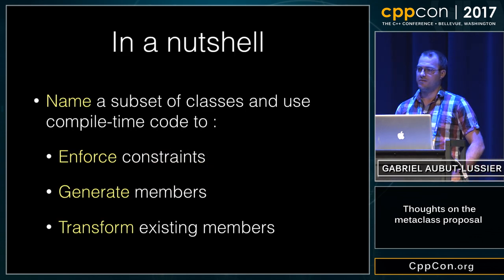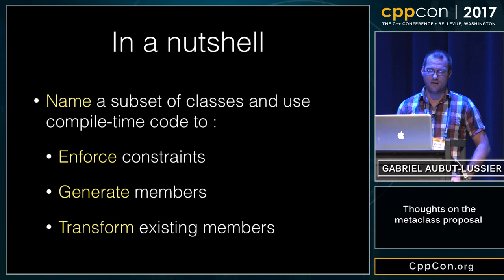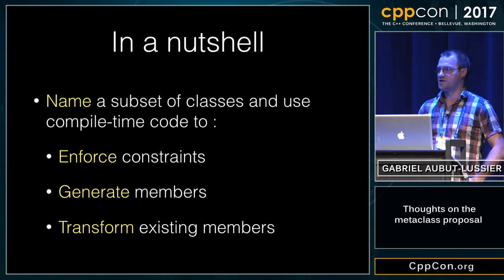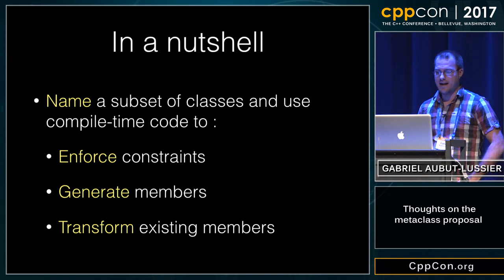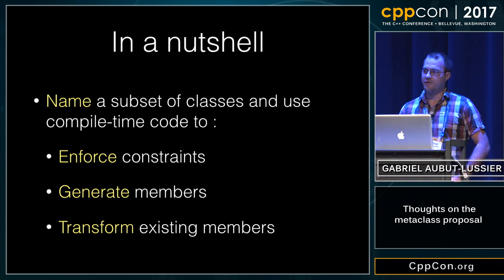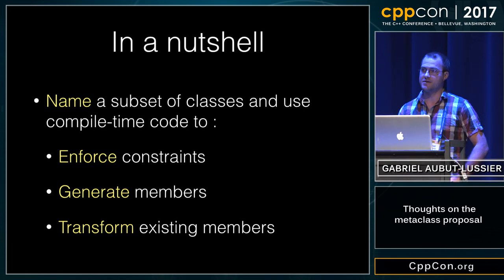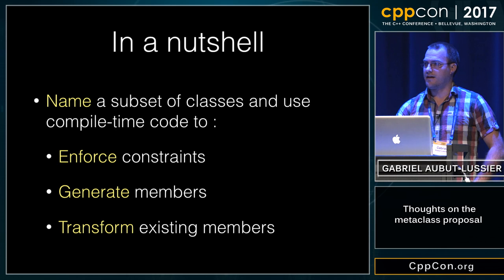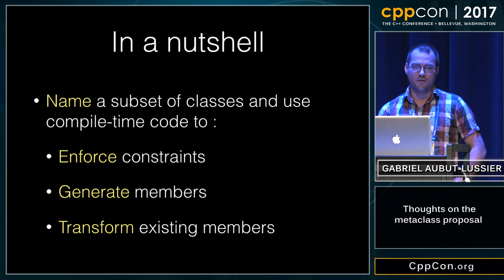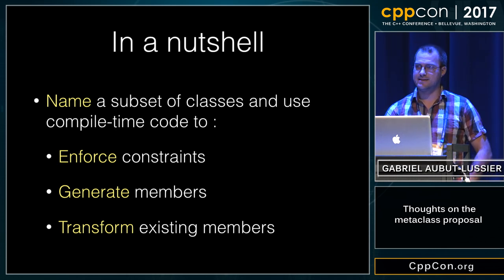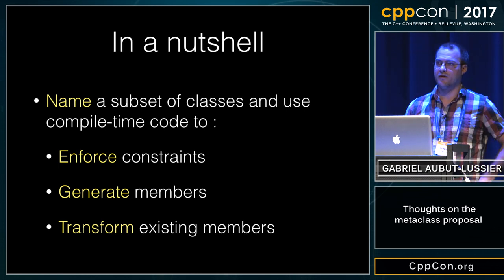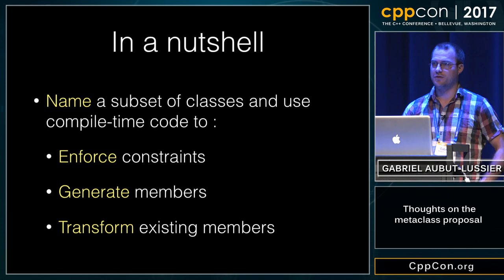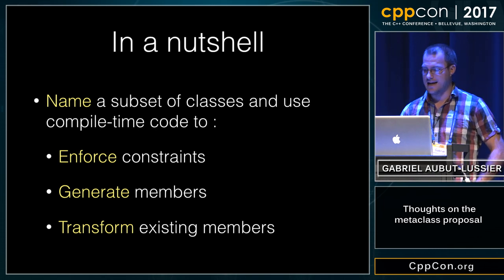Basically, if I go even more in a nutshell, what really stuck with me — the properties I really enjoy about Metaclasses — is that it allows you to enforce constraints, to generate members, and transform existing members, such as by applying defaults. Those really are the three most interesting properties that you can enable using Metaclasses. And overall, you also have this wonderful opt-in mechanism, which allows you to name a subset of the set of classes.